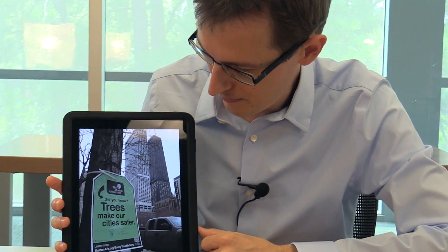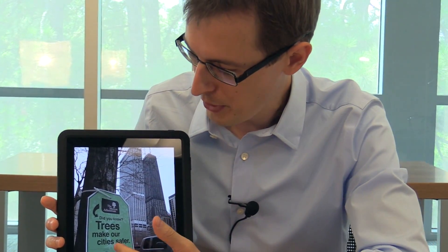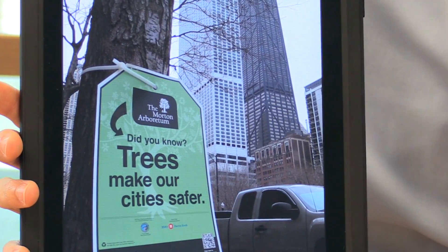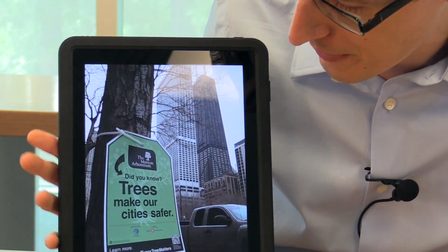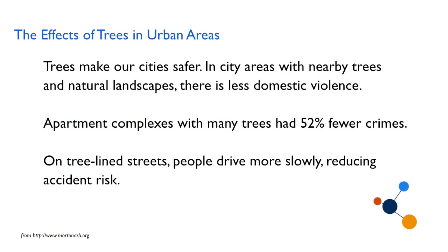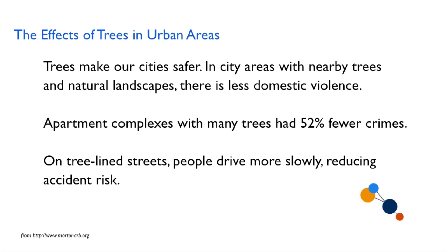Let's look at an example. This is a picture I took in downtown Chicago. The Morton Arboretum put these signs up all over the city around trees, and it says, 'Did you know trees make our cities safer?' So I went to their website, and what did they say? Trees make our cities safer. In city areas with nearby trees and natural landscapes, there is less domestic violence. Apartment complexes with many trees had 52% fewer crimes. And on tree-lined streets, people drive more slowly, reducing accident risk.